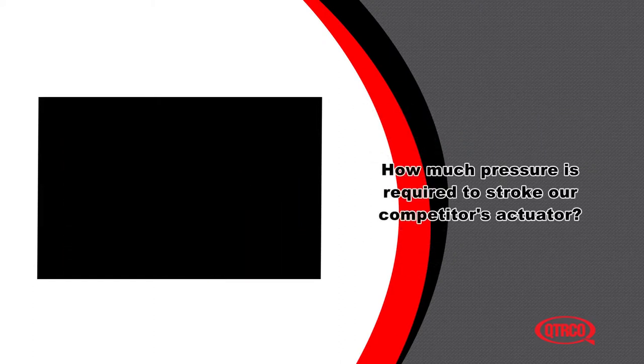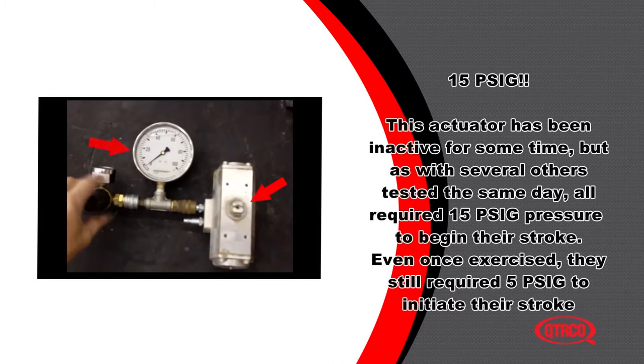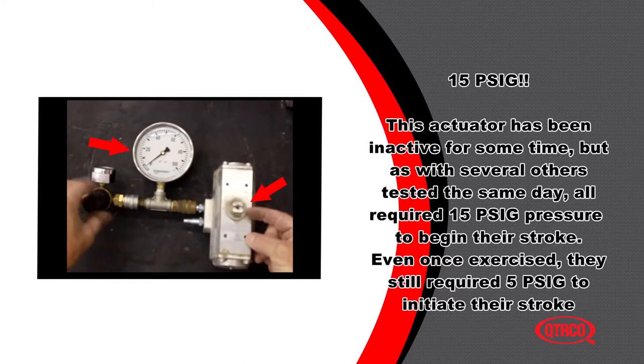How much pressure is required to stroke our competitor's actuator? 15 PSIG. This actuator has been inactive for some time, but as with several others tested the same day, all required 15 PSIG pressure to begin their stroke. Even once exercised, they still require 5 PSIG to initiate their stroke.